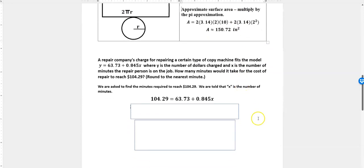The next one is a formula that's given in a problem. A repair company's charge for repairing a certain type of copy machine fits the model y equals 63.73 plus 0.845x, where y is the number of dollars charged and x is the number of minutes the repair person is on the job. So you have a flat fee and then a cost per how long it takes.